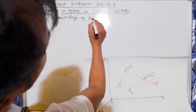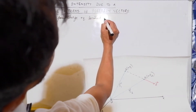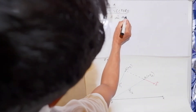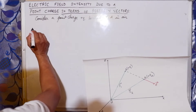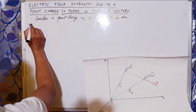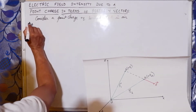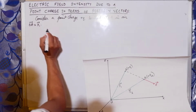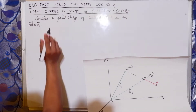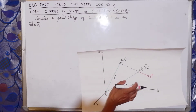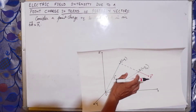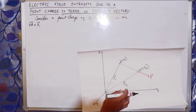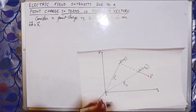Consider a point charge plus Q located at point A. The position vector OA is equal to R1. We are desired to find the electric field intensity at point B, which is at position vector R2 from O.